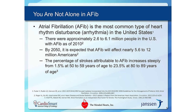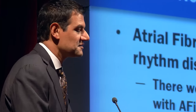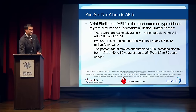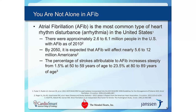Atrial fibrillation is the most common type of irregular heart rhythm in the United States. Unfortunately, its incidence is actually increasing, which isn't the case for many other heart conditions that we've done a better job of preventing. The really important reason we care about atrial fib is not so much the problems it causes directly, but because of its complications.